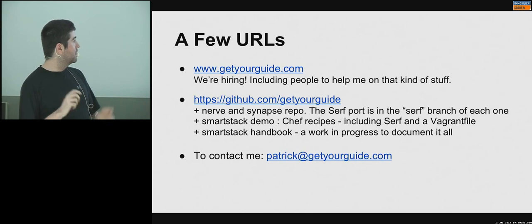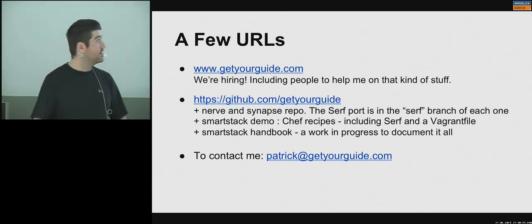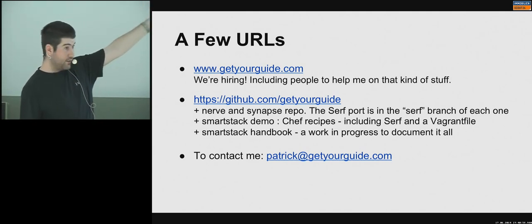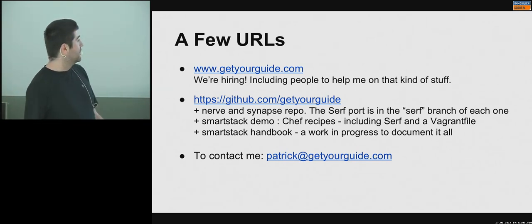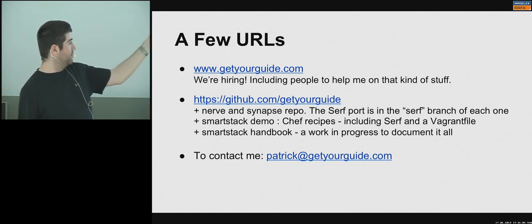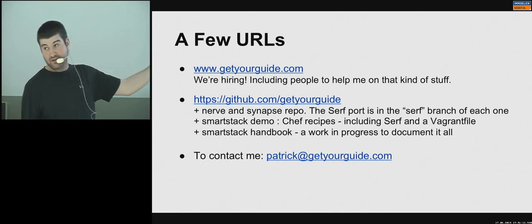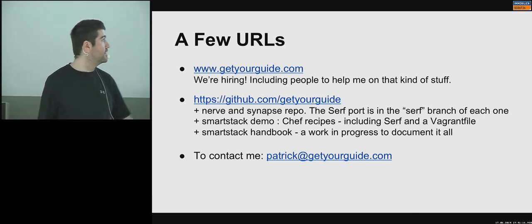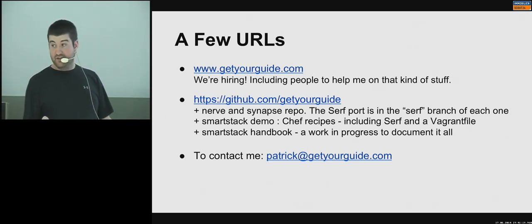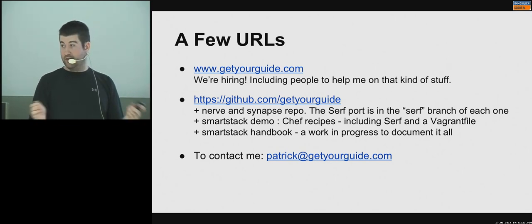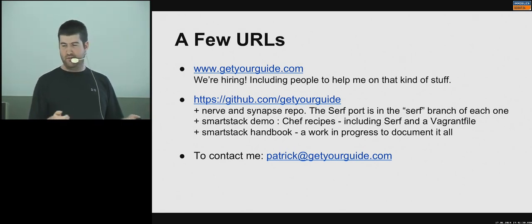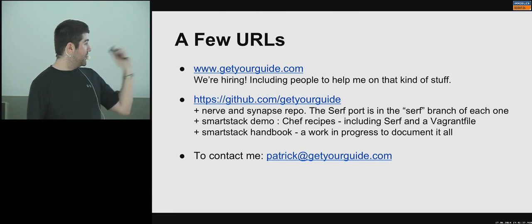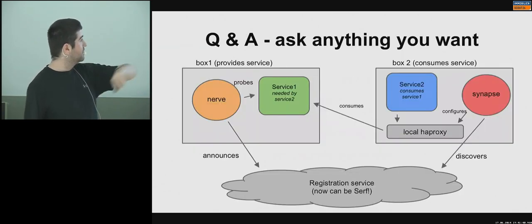That's about it for the talk. GetYourGuide is hiring, including people to help with this, PHP developers, front-end, and so on. Everything is open sourced on the GetYourGuide GitHub repo — our fork of Nerve and Synapse, with patches that are really small, maybe a hundred lines each. There's also a SmartStack demo with a full Vagrant file — just clone the repo, run 'vagrant up,' and you're done — plus a handbook with lots of examples.